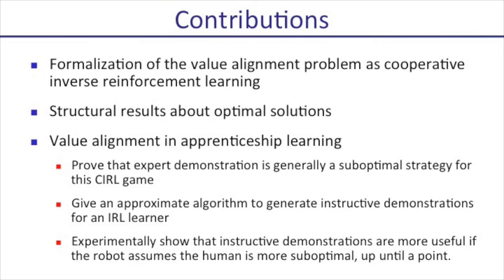Our paper makes the following contributions. We formalize the value alignment problem as cooperative inverse reinforcement learning, which can be seen as a subclass of cooperative games with special structure in each agent's private information. We give structural results about computing optimal policies, and show that we can leverage this structure to get an exponential reduction in complexity.